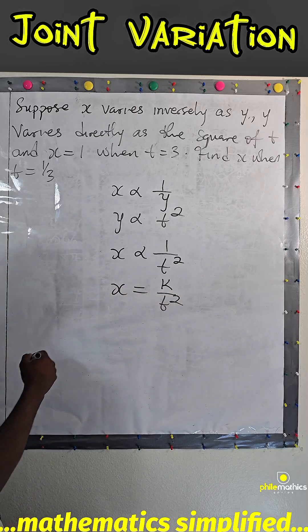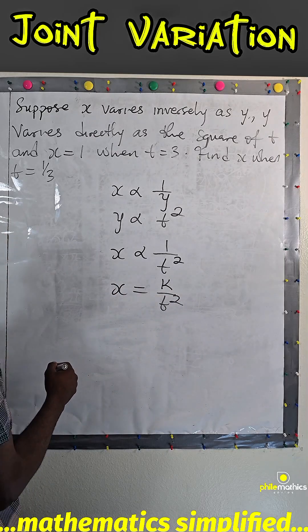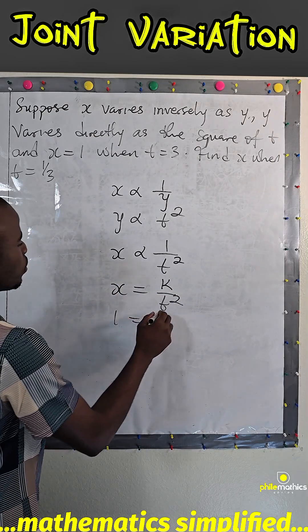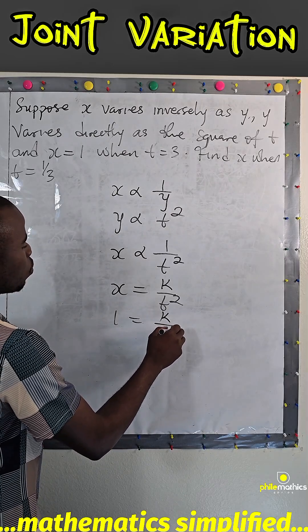Now we are told that x is 1 when t is 3. So 1 equals k over 3 square, which means k equals 9.